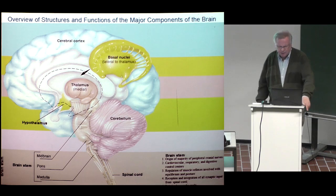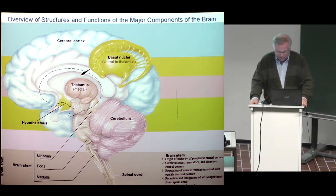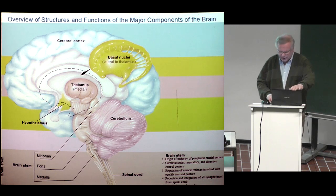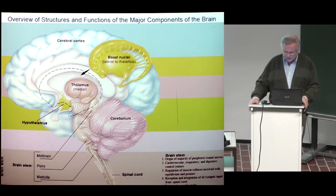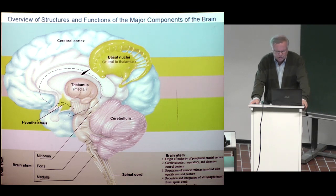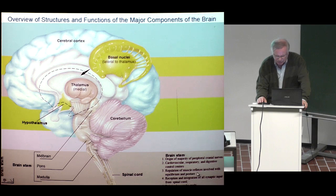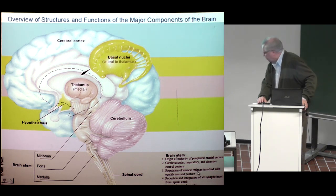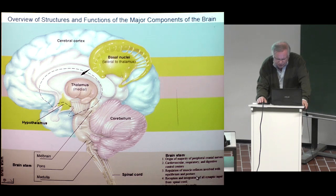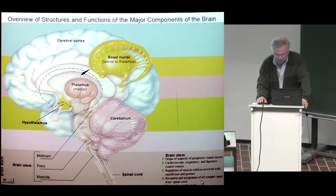In the brainstem there are the most basic functions: the origin of the majority of peripheral cranial nerves, cardiovascular, respiratory, and digestive control centers, regulation of muscle reflexes involved with equilibrium and posture, reception and integration of synaptic input from the spinal cord, and a role in the sleep-wake cycle.